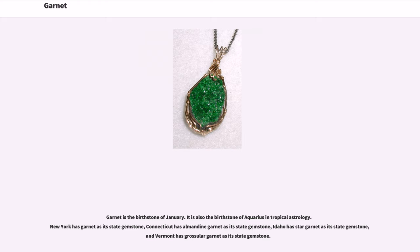Garnet is the birthstone of January and also the birthstone of Aquarius in tropical astrology. New York has garnet as its state gemstone, Connecticut has Almandine Garnet as its state mineral, Idaho has Star Garnet as its state gemstone, and Vermont has Grossular Garnet as its state gemstone.